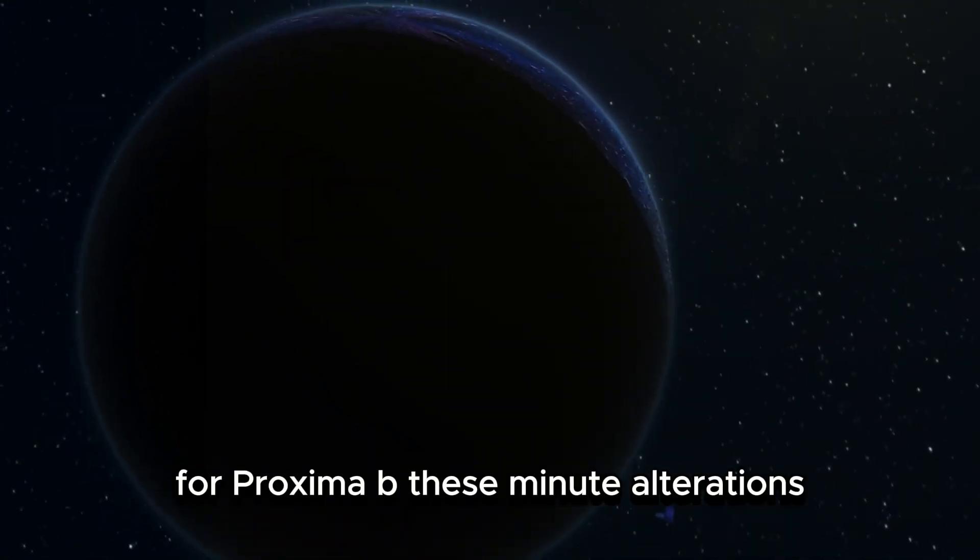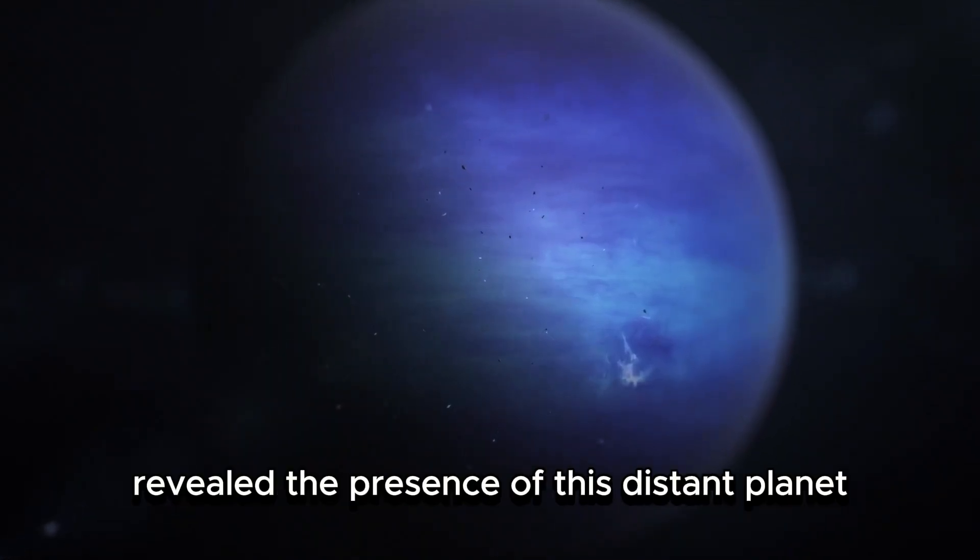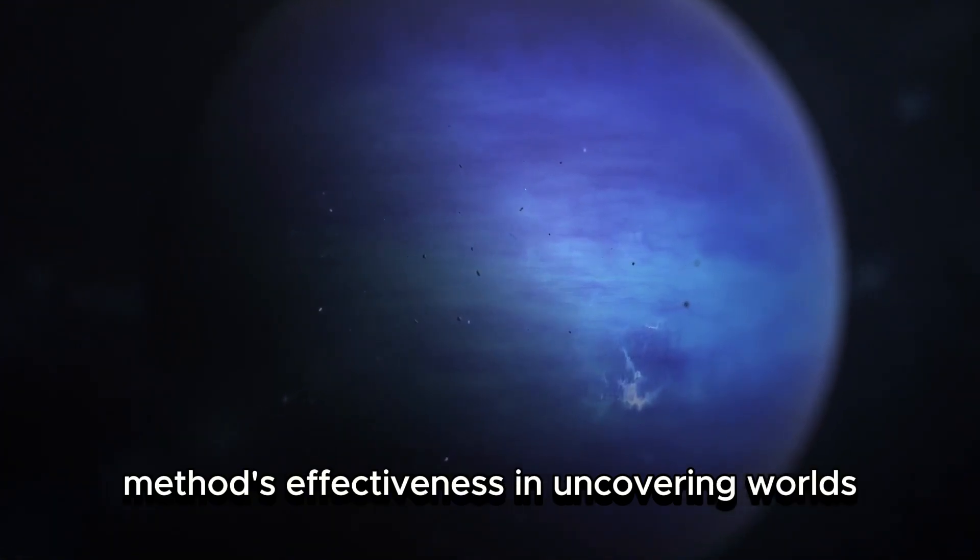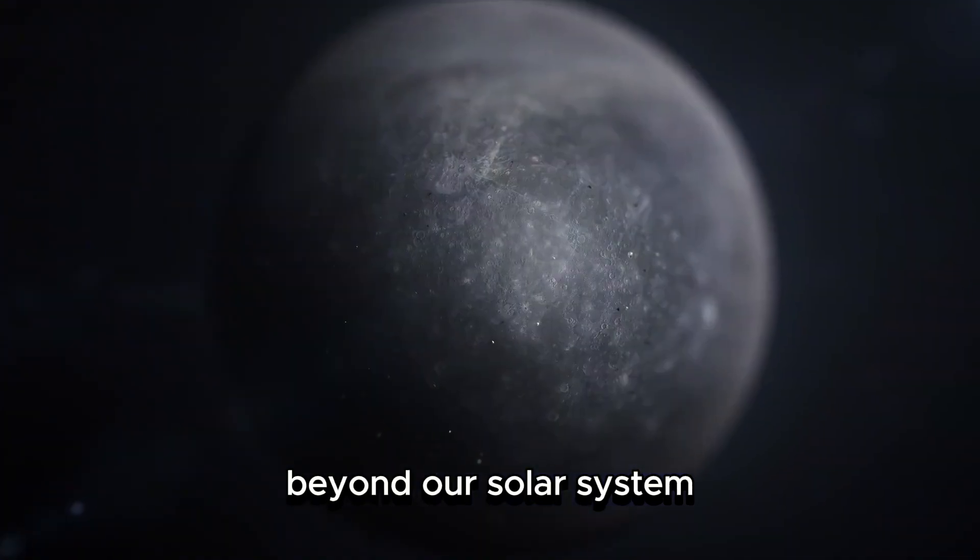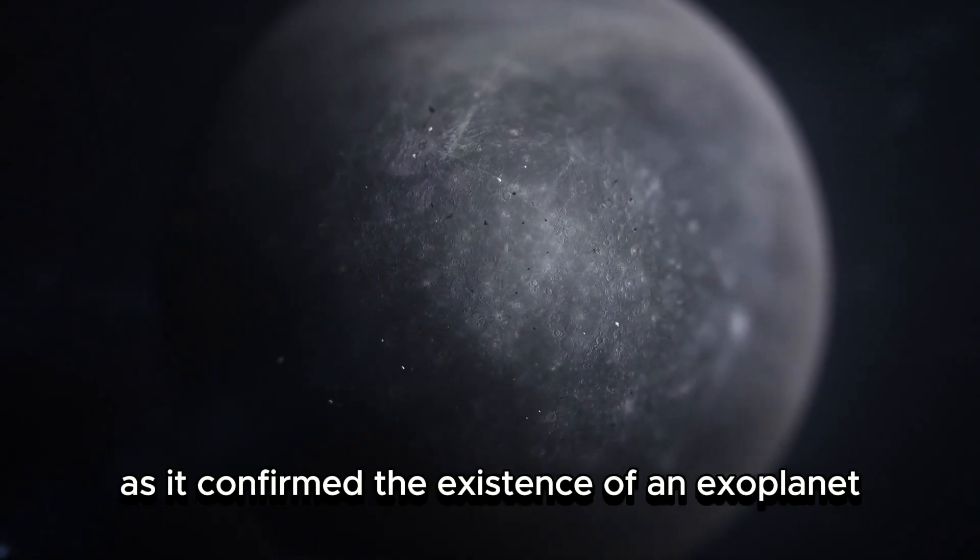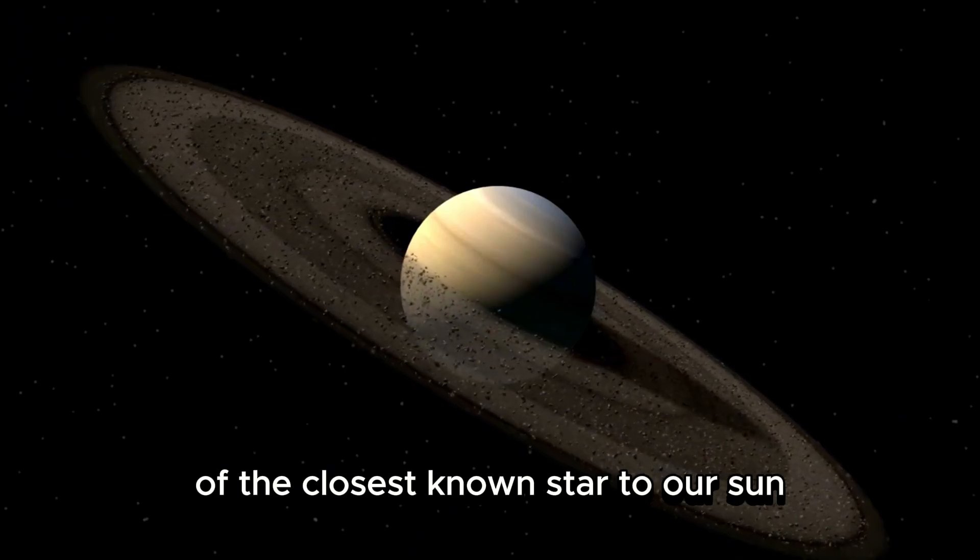For Proxima b, these minute alterations in the star's spectrum revealed the presence of this distant planet, demonstrating the radial velocity method's effectiveness in uncovering worlds beyond our solar system. Identifying Proxima b was a significant achievement, as it confirmed the existence of an exoplanet within the habitable zone of the closest known star to our Sun.